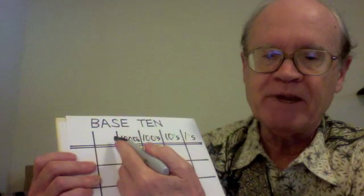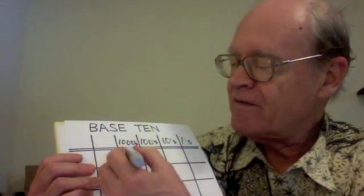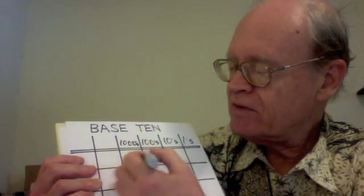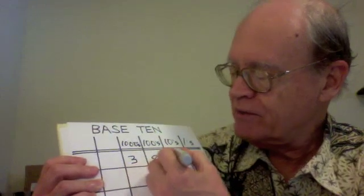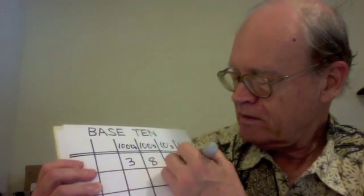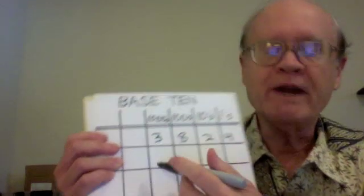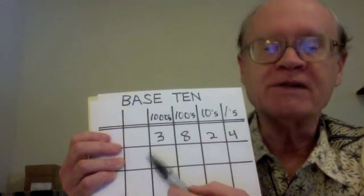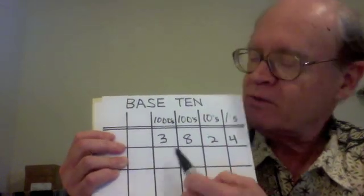This would be the ten thousands place. So if I have this number, 3, 8, 2, 4, we know what each numeral means. The 3 means 3 times 1,000, which is 3,000.